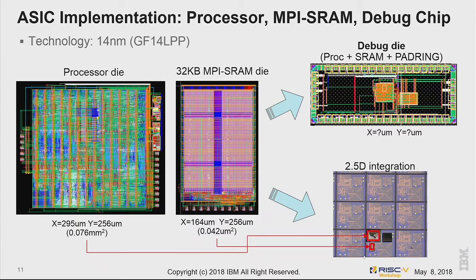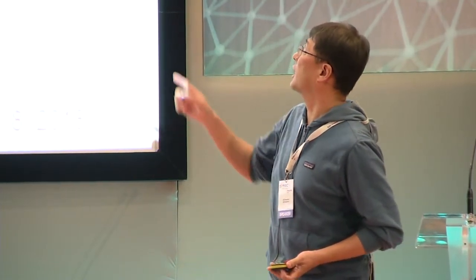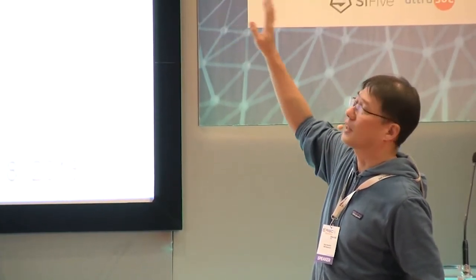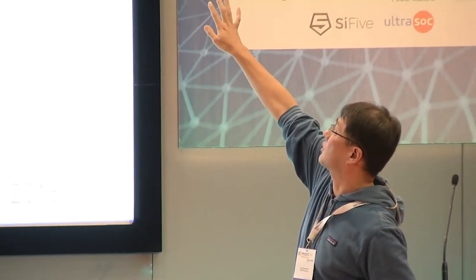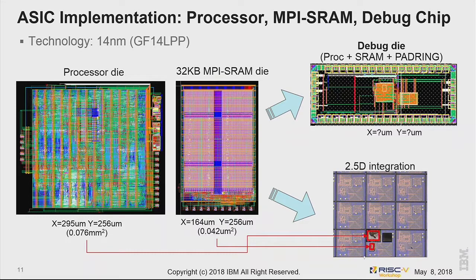This is our actual chip. The left side is our processor die using 0.07 millimeter square, and the SRAM die is 32 kilobytes using 0.04 millimeter square. Since the devices are too small and not easy to debug, we also created a debug die configuration containing the processor and SRAM connected together, with normal wire bonding pads on the outside for testing.